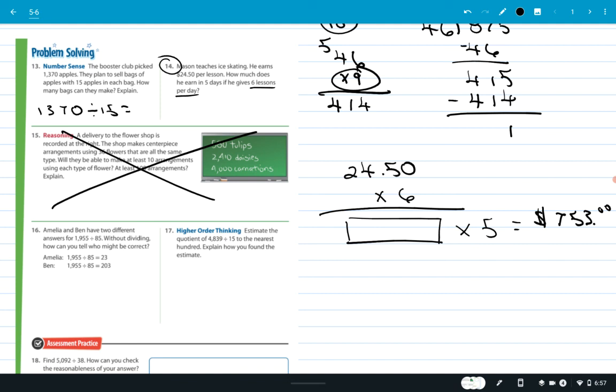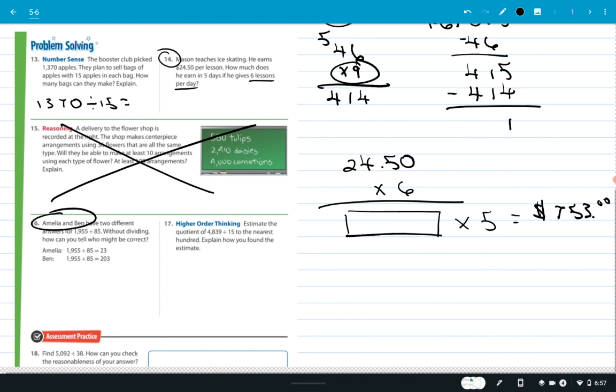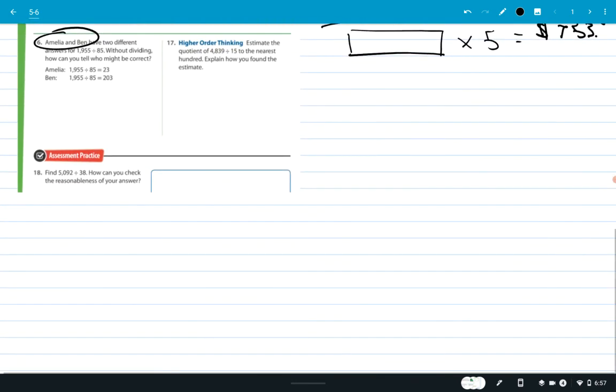Number 16, I want to know who's right, is it Emilia or Ben? And then number 17, estimate the quotient to the nearest hundredth. Explain how you found the estimate. To the nearest hundredth, so we're talking about 100, 200, 300, 400, 500, that sort of thing. So just divide that. And then find number 18, you can do that, 5092 divided by 38. Okay, so that's it. I'm going to end this video. I hope this worked.